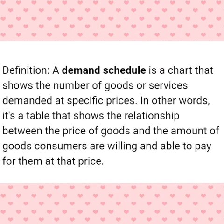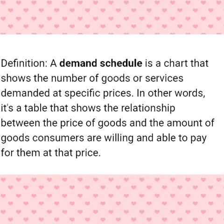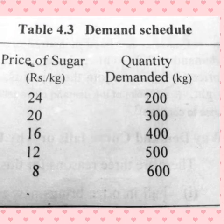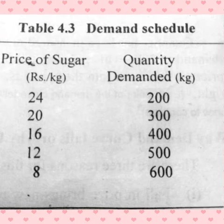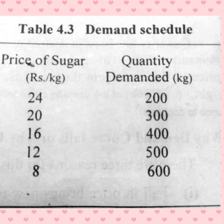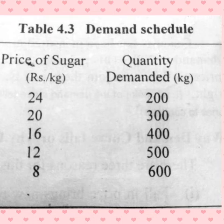First, what is meant by a demand schedule? A demand schedule is a table that shows the relationship between the price of a good and the quantity demanded. It shows the quantities of a good or service which buyers would be willing and able to purchase at various prices. We select different prices of a commodity along with the quantities bought at those prices, and when these pairs of price (P) and quantity (Q) are put in a table, we get a demand schedule.